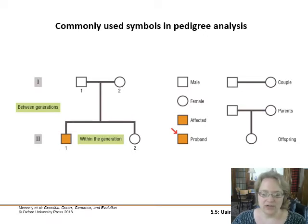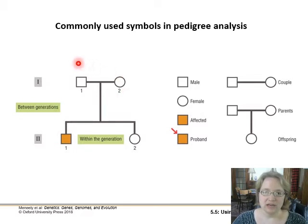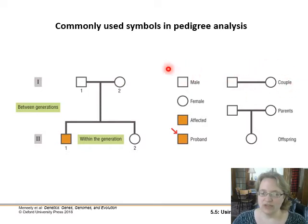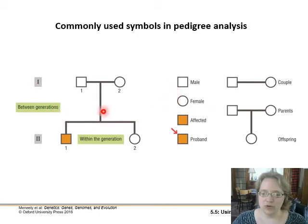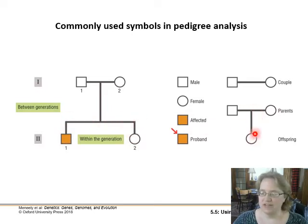So we have a generation here, and it's indicated with a Roman numeral. Each person within that generation is indicated with an Arabic numeral. The horizontal line between them indicates a couple. We use squares to indicate male and circles to indicate female. We show offspring with a vertical line coming down from the couple, splitting off into multiple offspring or down to a single person.